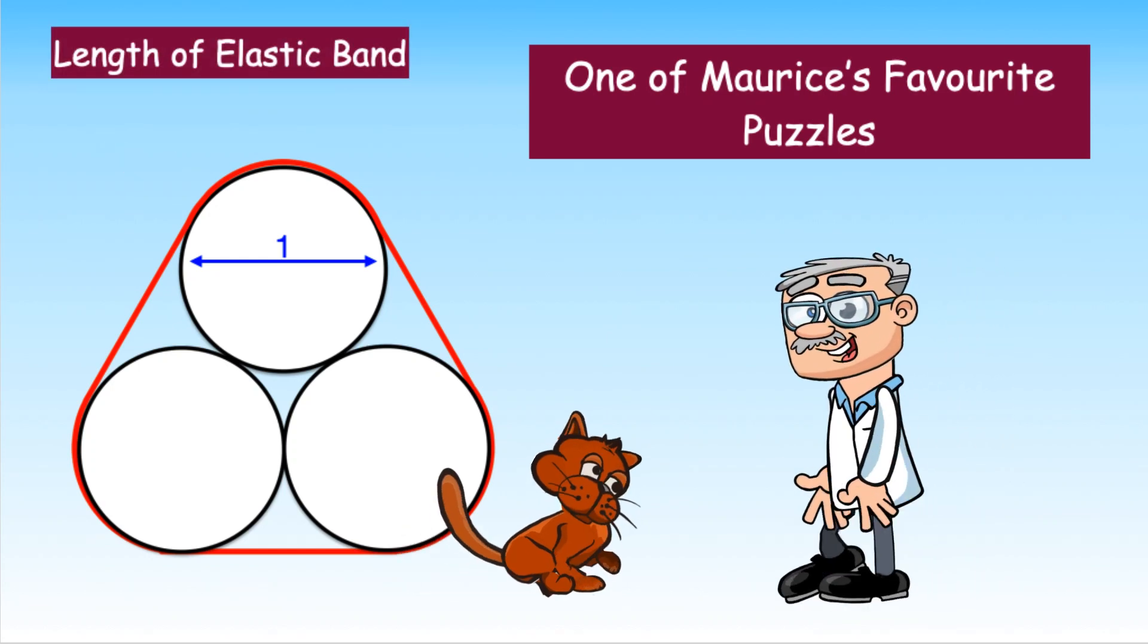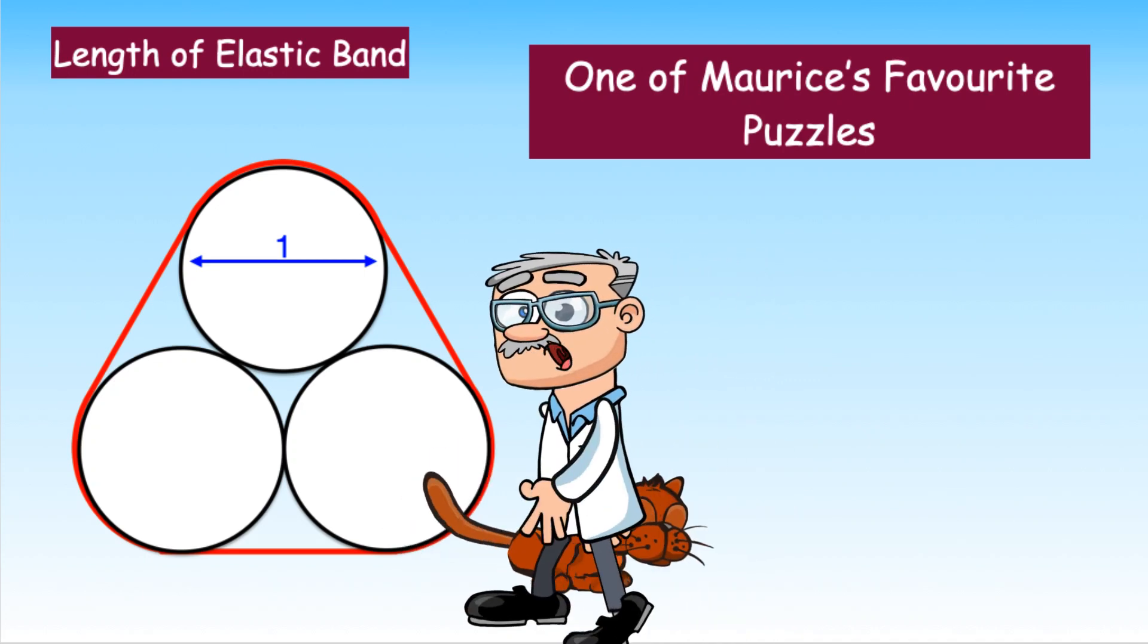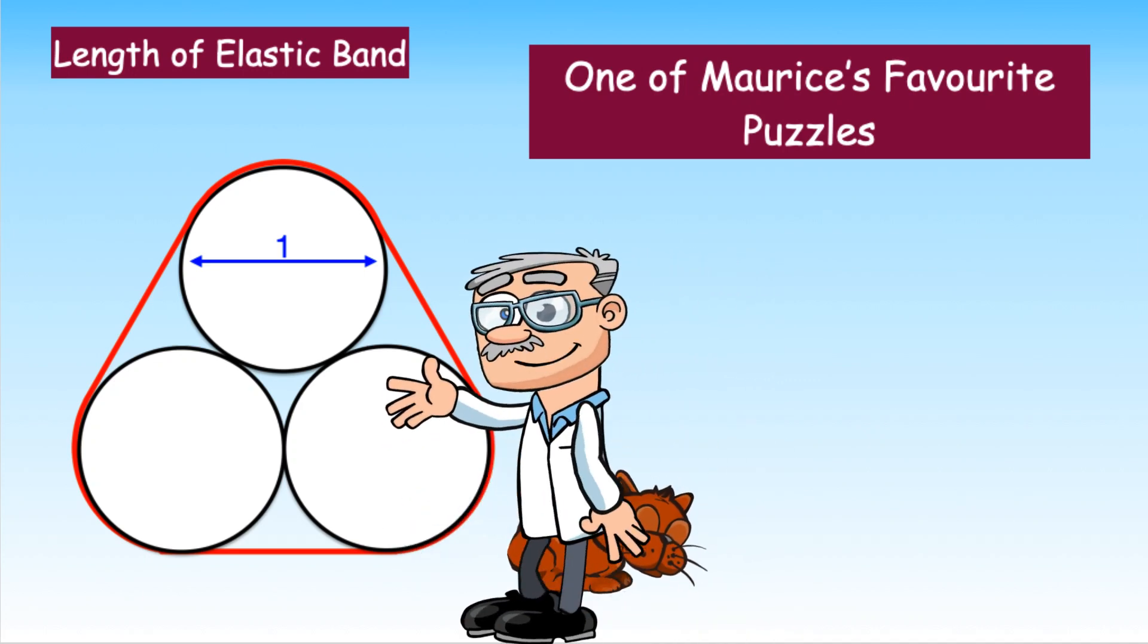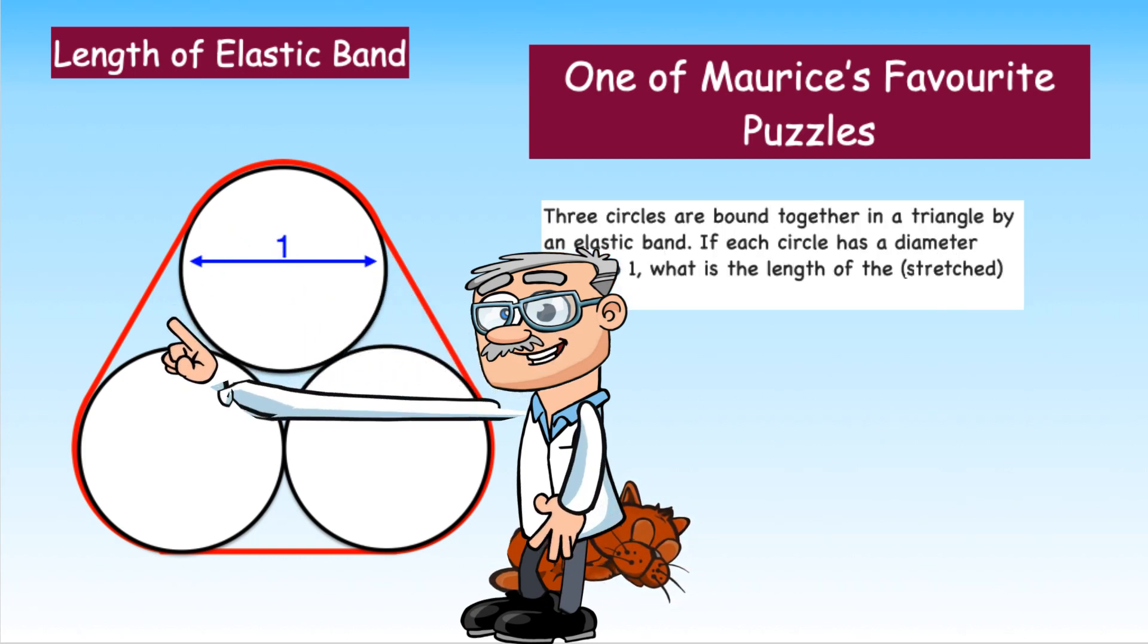Thank you Morris. In this puzzle three circles are bound together in a triangle by an elastic band. If each circle has a diameter equal to one, what is the length of the stretched elastic band?